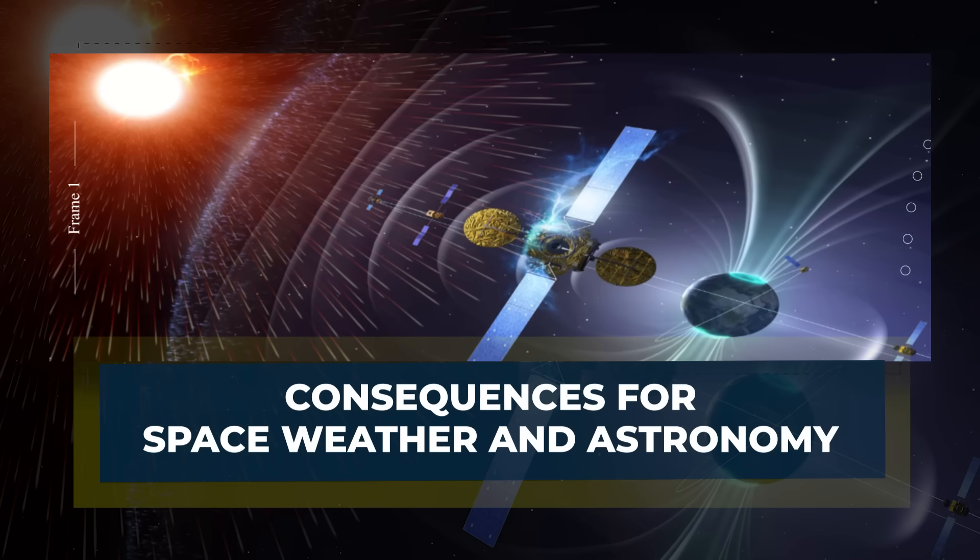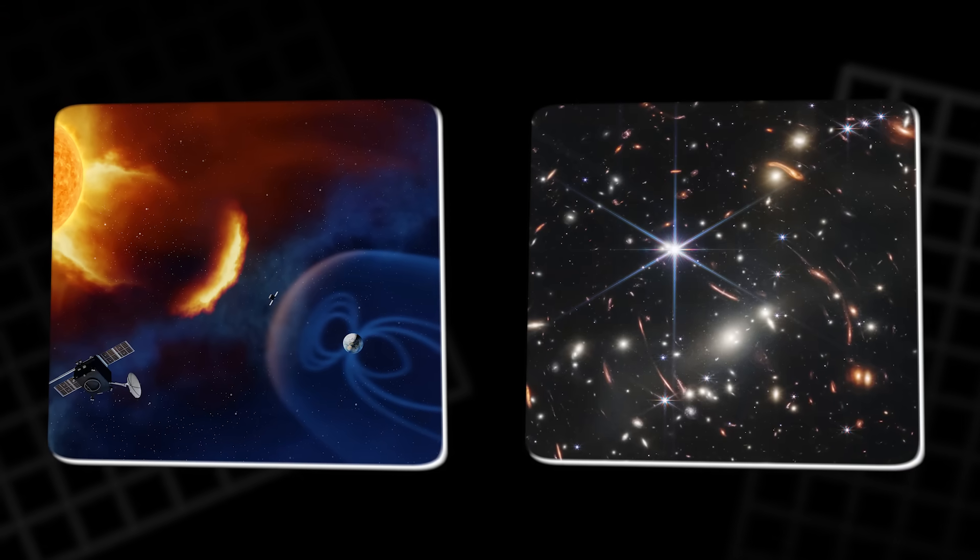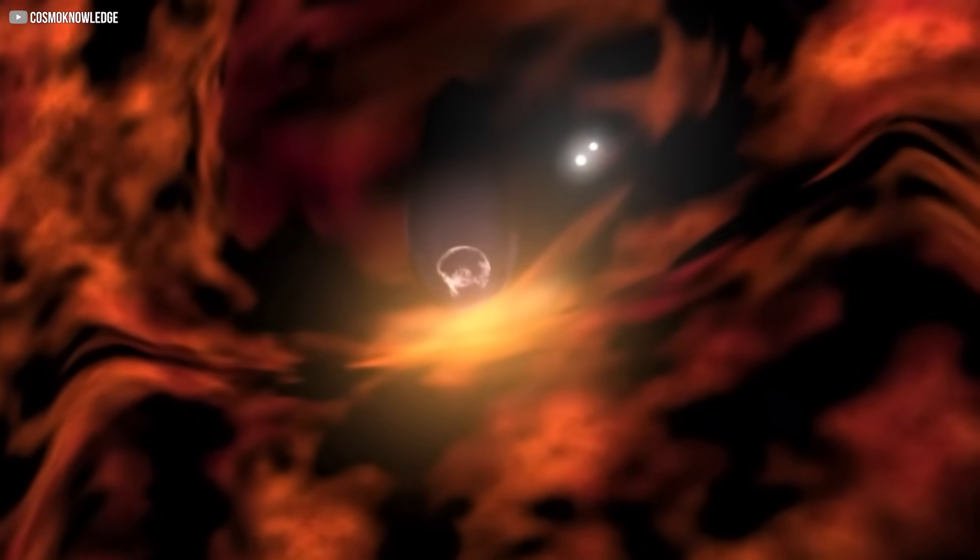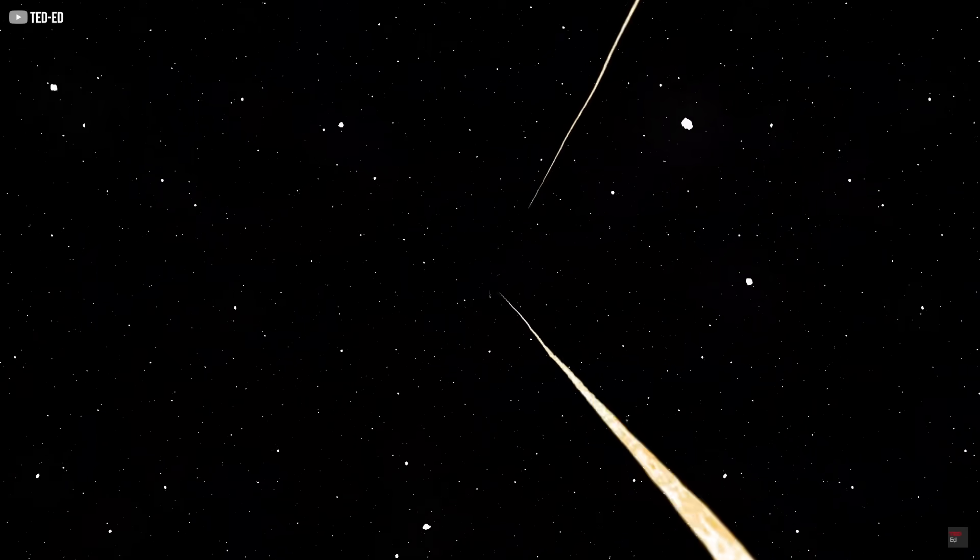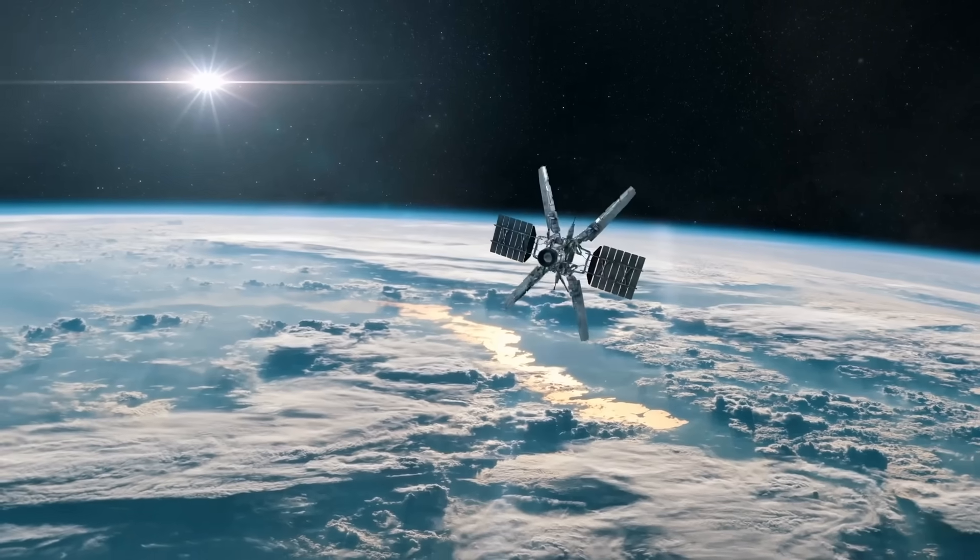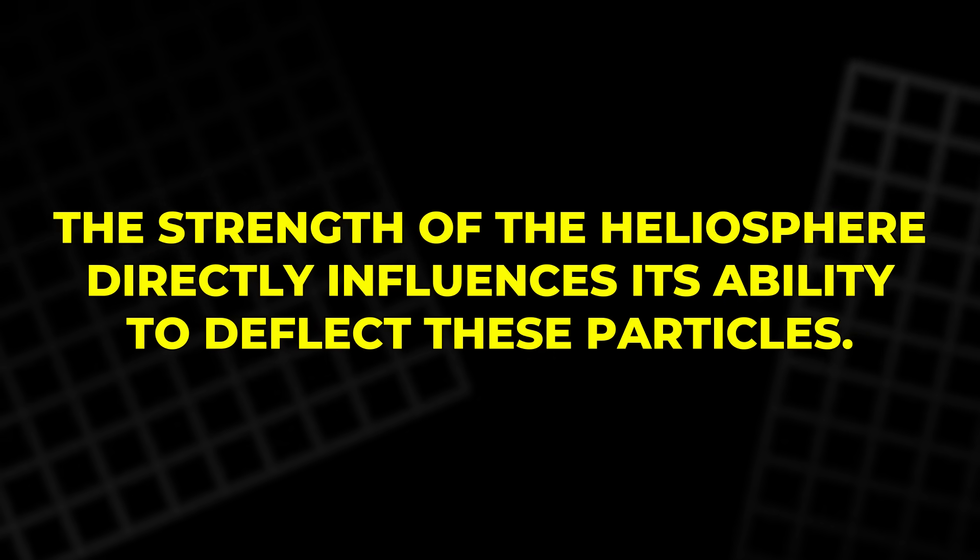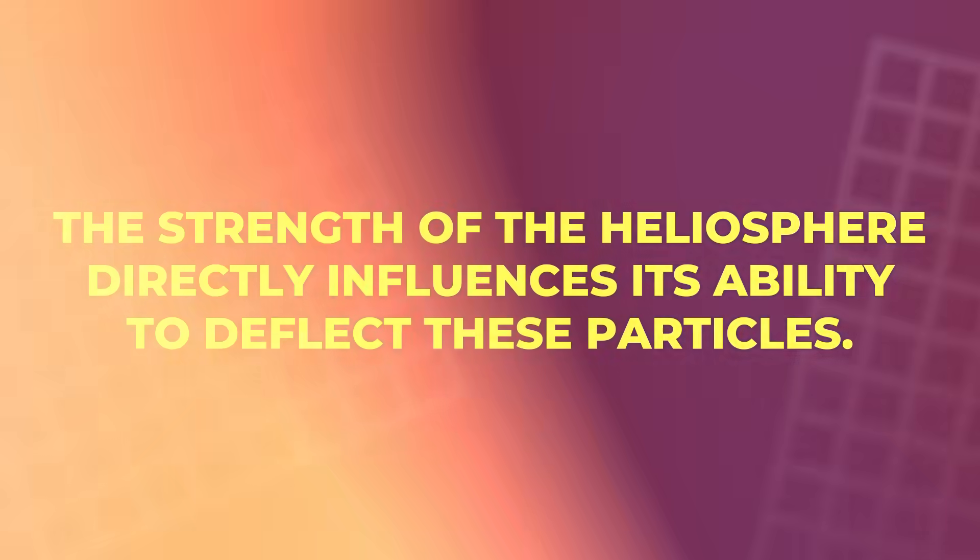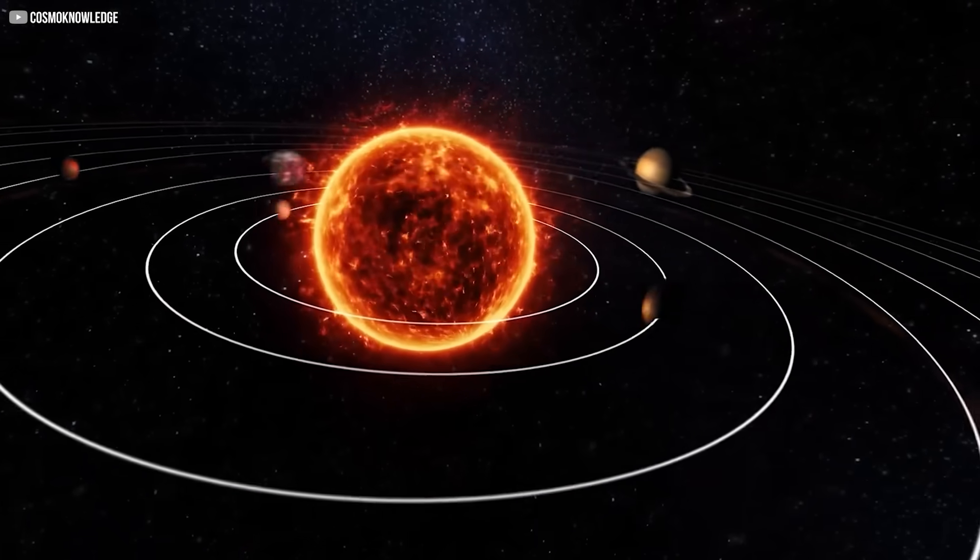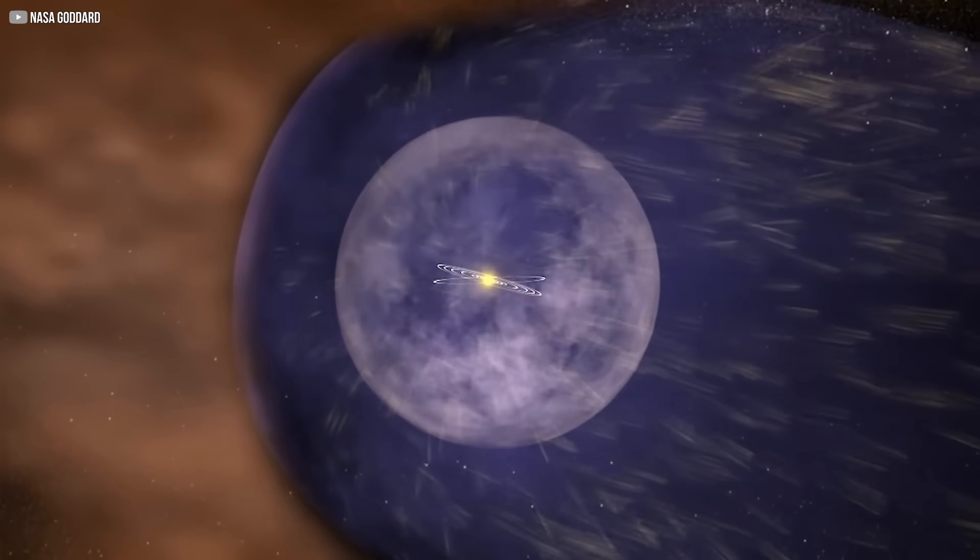Understanding the dynamics of the heliopause has significant implications for space weather and astronomy. The heliosphere plays a crucial role in protecting Earth and its space technology from harmful galactic cosmic rays. These high-energy particles pose a threat to satellites, astronauts, and even Earth's atmosphere. The strength of the heliosphere directly influences its ability to deflect these particles.